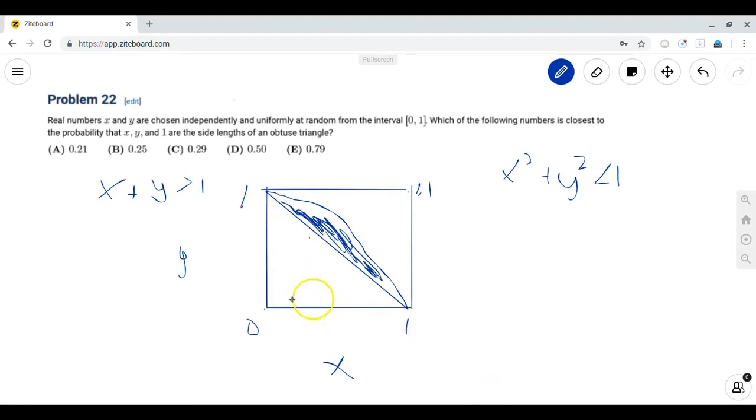Since this is the right triangle, we know that the area of the triangle over here is equal to 1 times 1 over 2, which is 1 half. And the area of the quarter circle is equal to pi r squared over 4, because it's a quarter circle, which is equal to pi over 4.